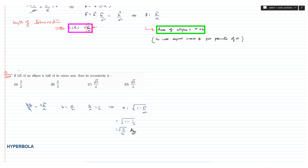The question is: if the latus rectum of an ellipse is half of its minor axis, what is the eccentricity? Let us assume the standard ellipse x²/a² + y²/b² = 1. The length of the latus rectum is 2b²/a, which equals half of the minor axis. The length of the minor axis is 2b, so half of it is b.